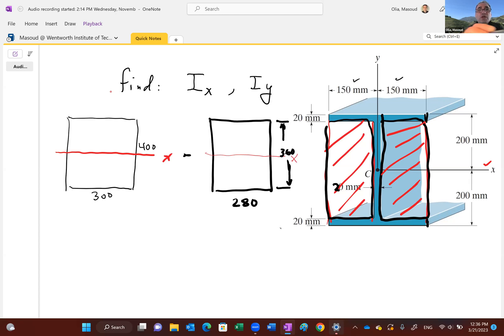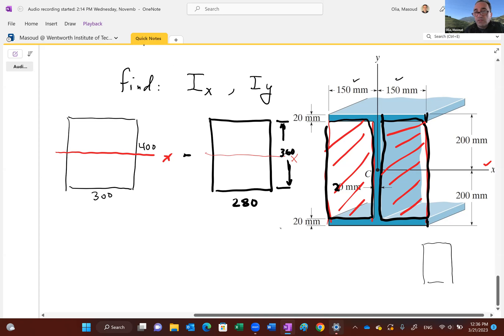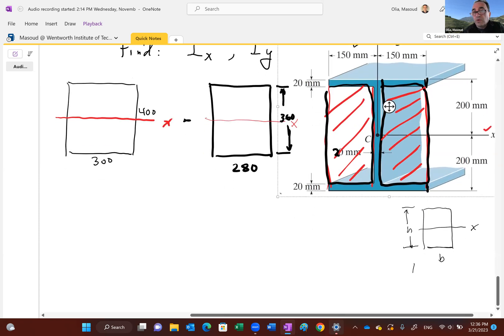So you guys know from probably other videos that you've seen in your class, in your course, that I for a rectangular section, and this is an important formula, if the width is b and the depth is h, with respect to this axis, call it x-axis, is equal to what? It's a formula that you have in a table, 1/12 bh³.